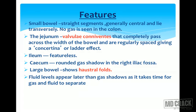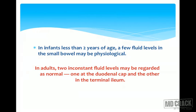Fluid levels appear later than gas shadows, as it takes time for fluid and gas to separate. In infants less than 2 years of age, a few fluid levels are commonly seen in the small bowel. In adults, two inconstant fluid levels may be regarded as normal — one at the duodenal cap and one at the terminal ileum.